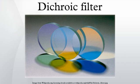A dichroic filter, thin film filter, or interference filter is a very accurate color filter used to selectively pass light of a small range of colors while reflecting other colors. By comparison, dichroic mirrors and dichroic reflectors tend to be characterized by the color of light that they reflect, rather than the color they pass.